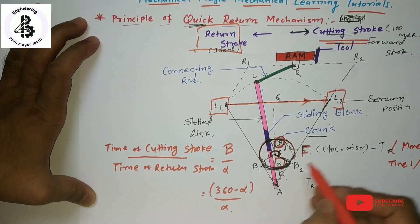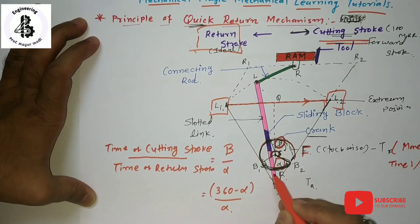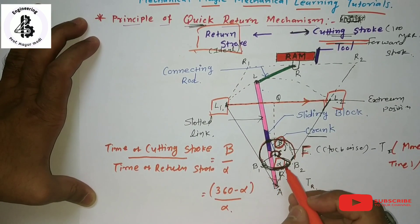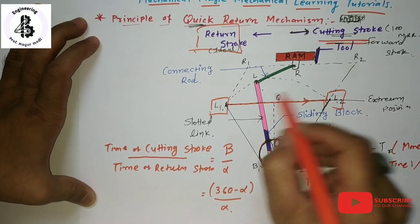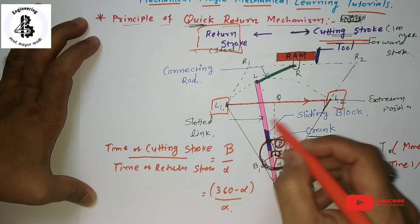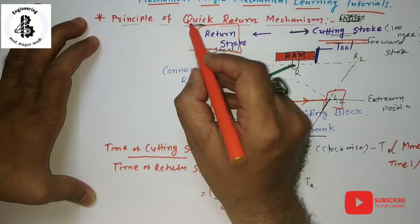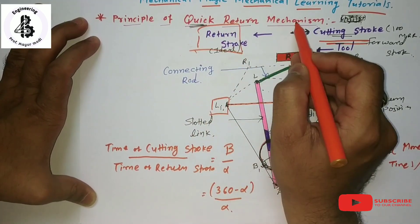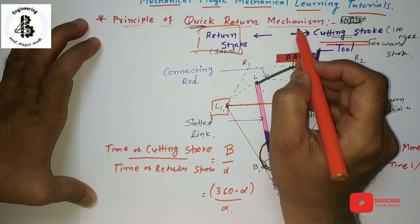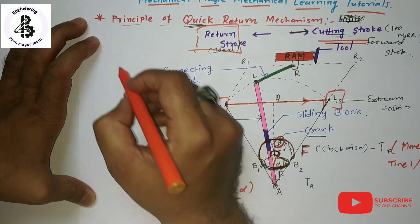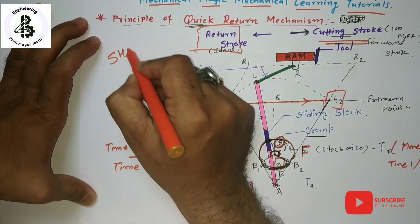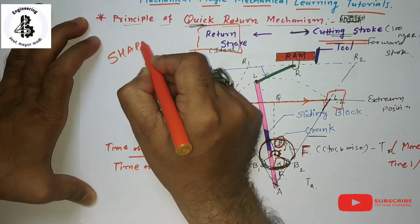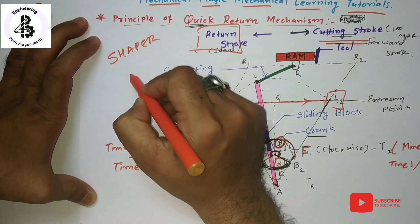So through the geometry of the AL link and the CB link, you can convert the two extreme positions L1 and L2 such that the forward stroke takes more time and the return stroke takes less time. This kind of mechanism is called a quick return mechanism, and it is used in the shaper machine.